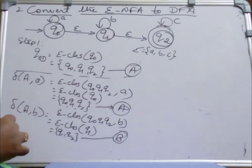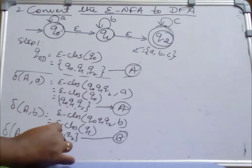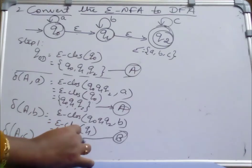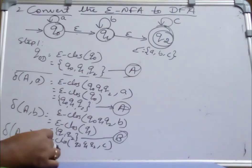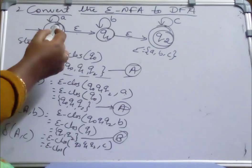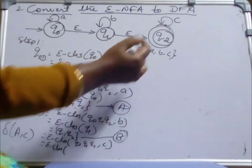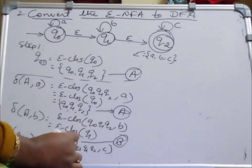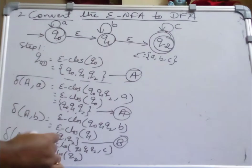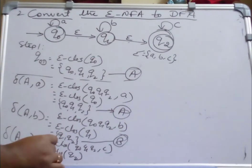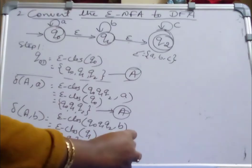Find transition of A on c. A on c equals Epsilon closure of {Q0, Q1, Q2} on c. Q0 on c we don't have a transition; Q1 on c we don't have a transition; Q2 on c it is going to Q2 itself. Epsilon closure of Q2 is Q2 itself. This is a new state — name this state as C.